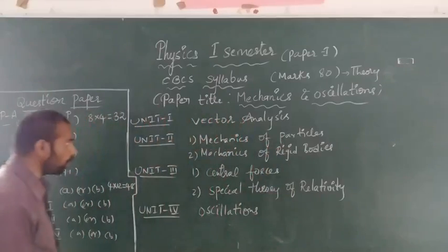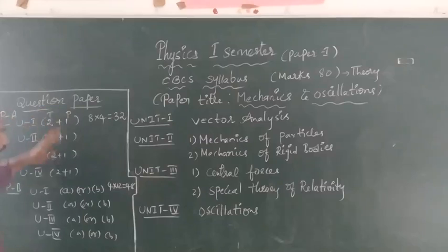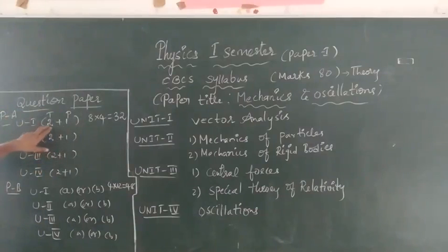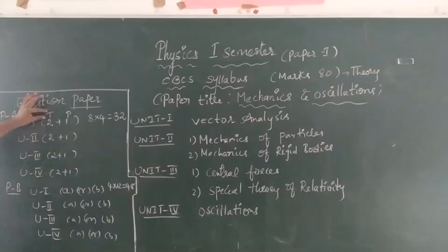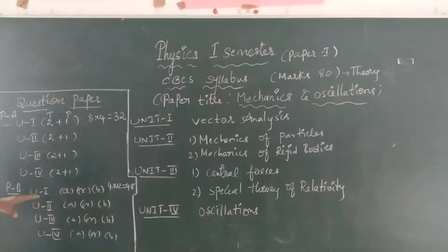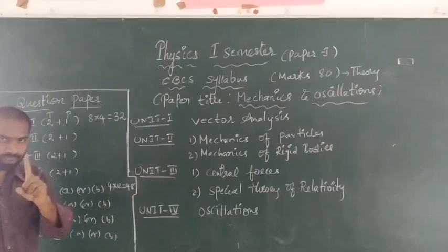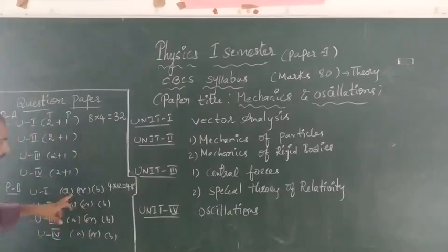Now we will see the question paper pattern. In Part A, from each and every unit — Unit 1, Unit 2, Unit 3, and Unit 4 — we will get two or three questions and one problem. In Part B, from each and every unit we will get two questions with internal choice A or B, and we have to write one question from each unit.